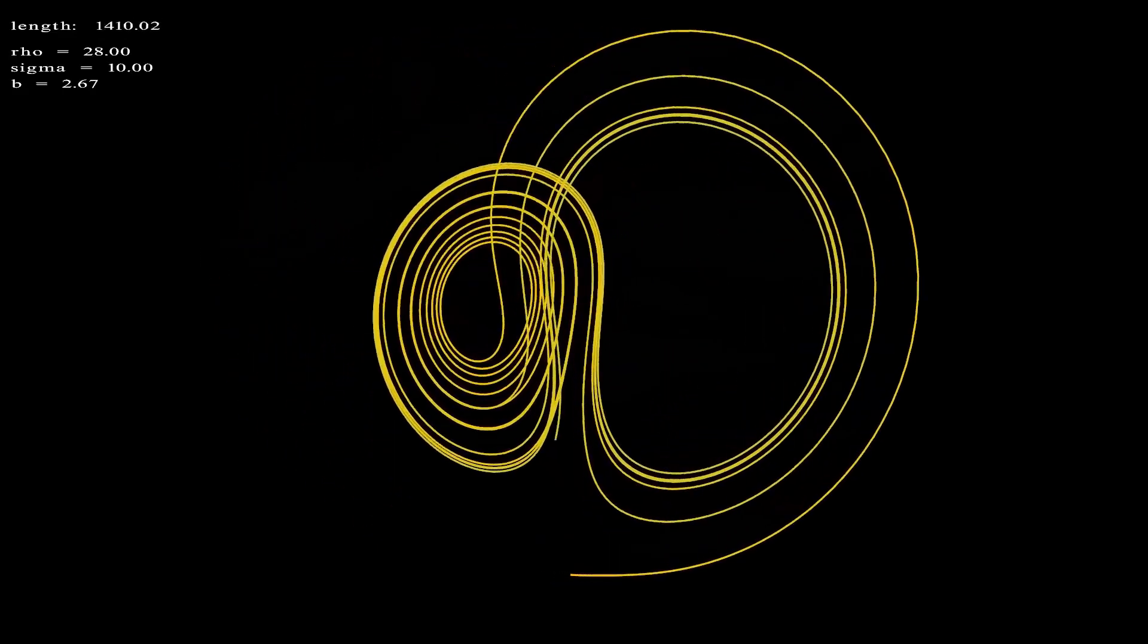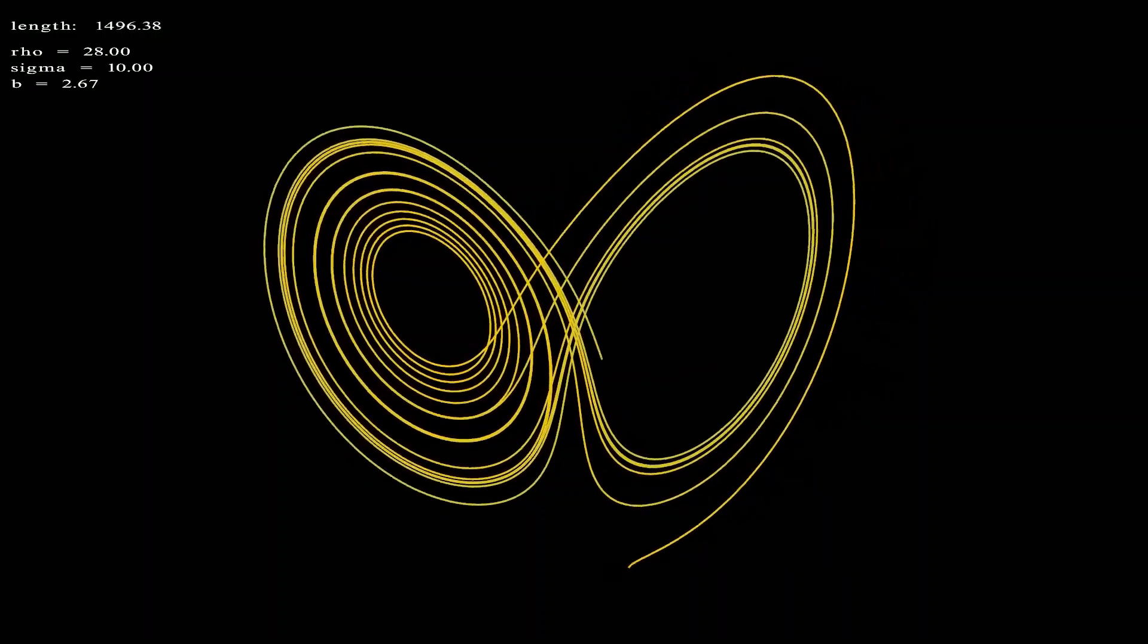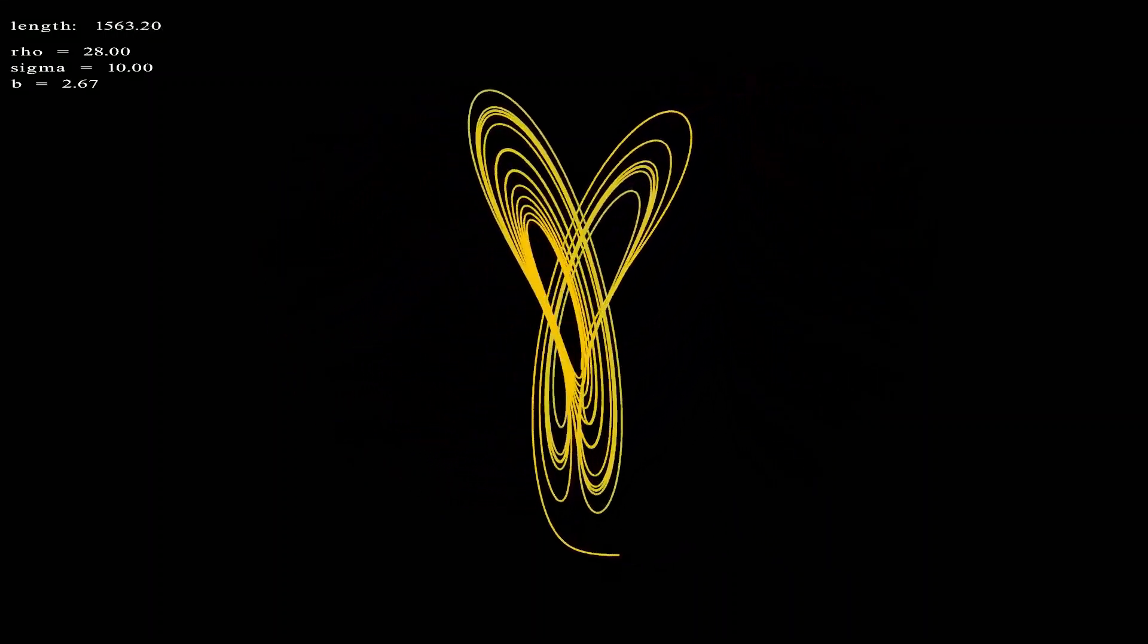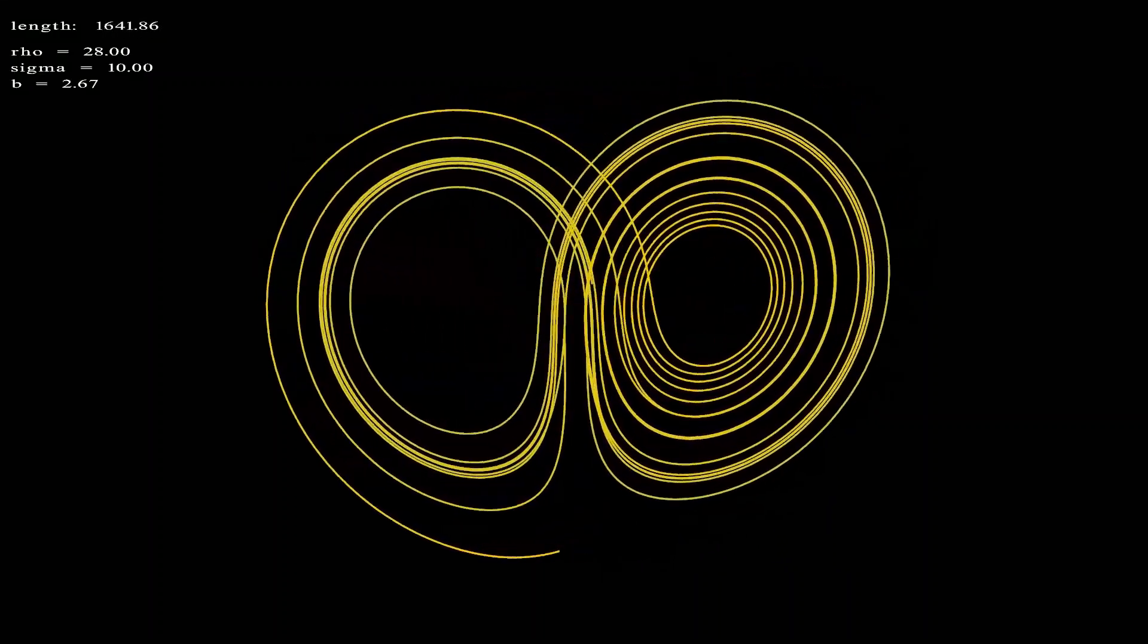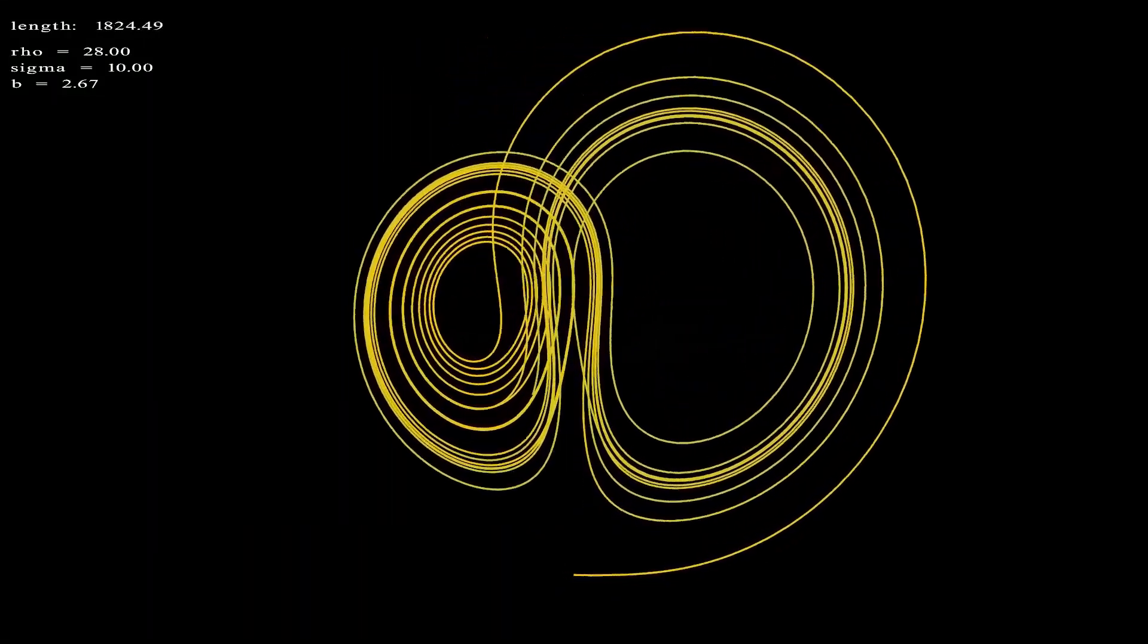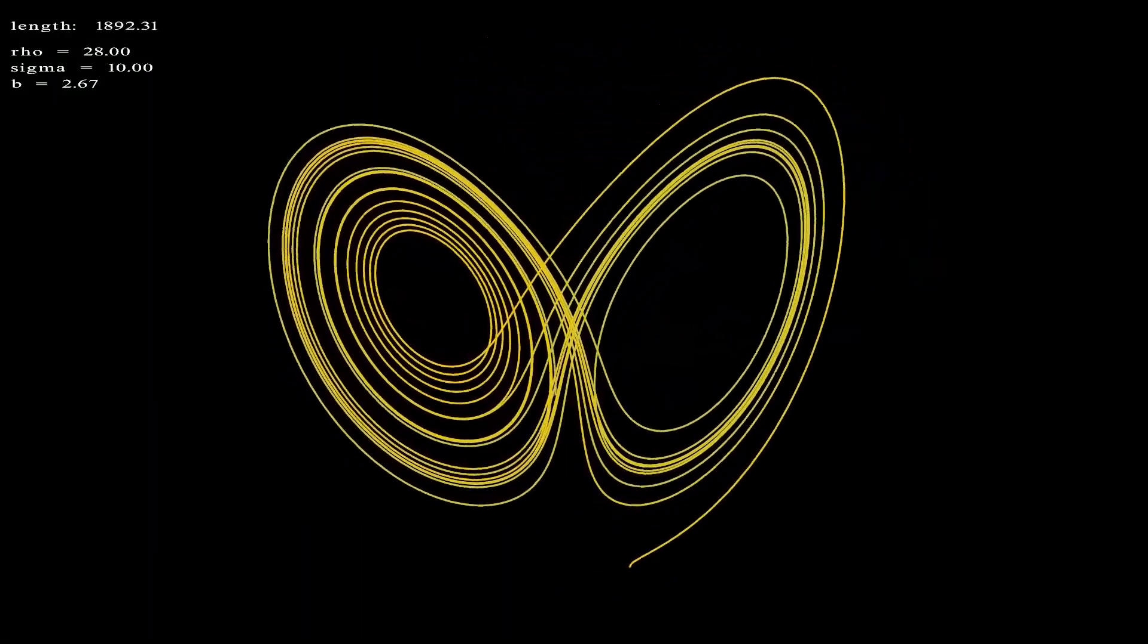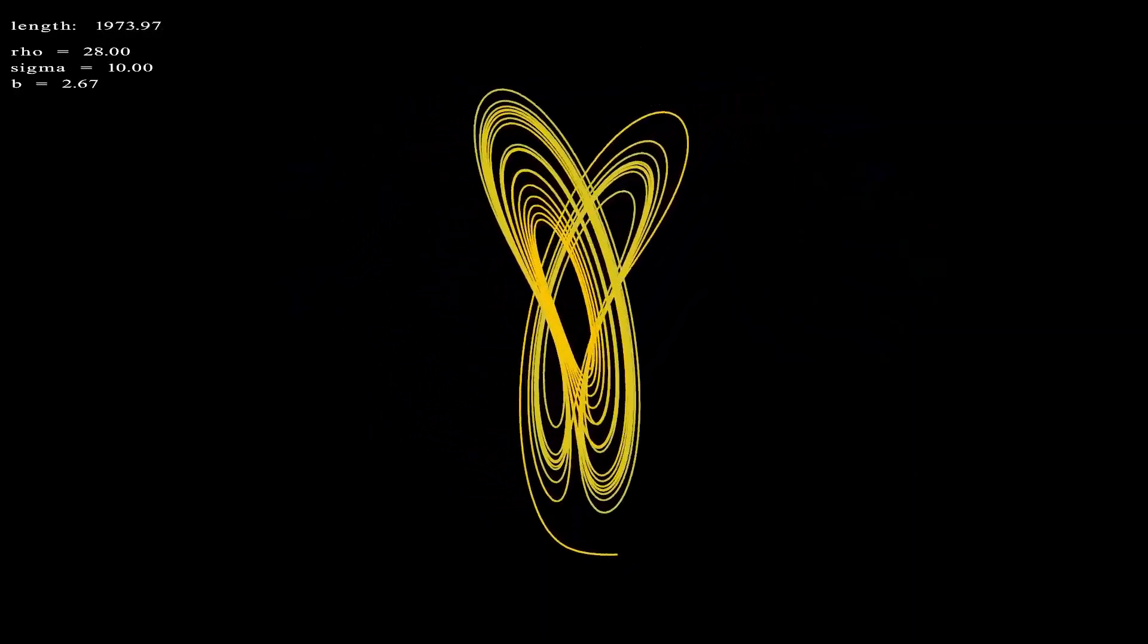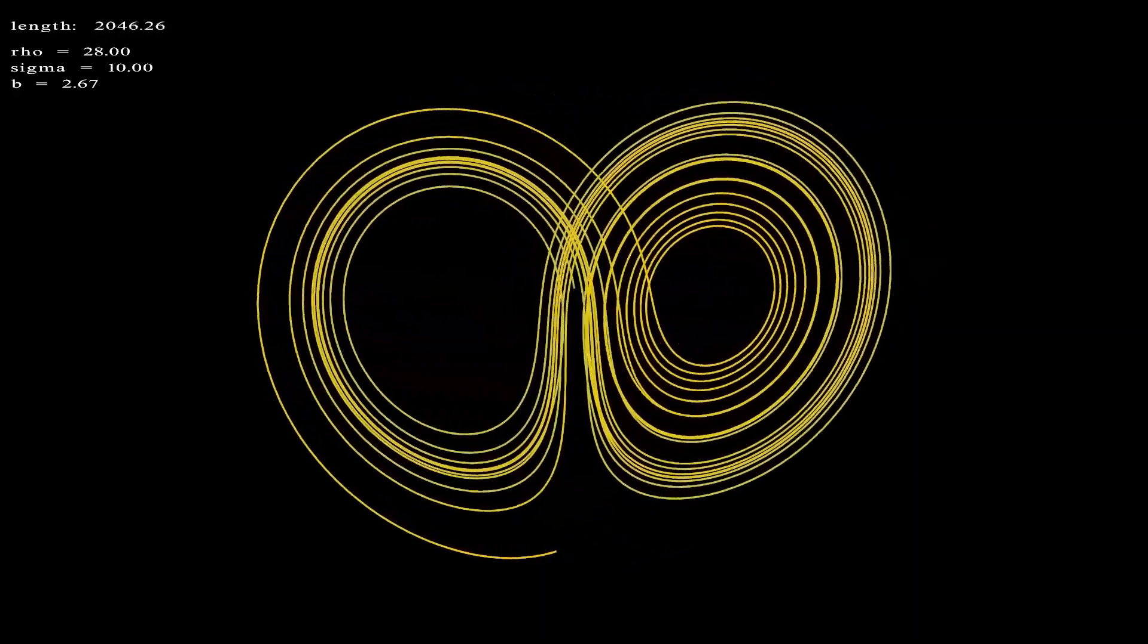The boundary of the attractor is fixed, because it's a product of the three weather equations. Yet inside it the behavior is totally unpredictable.